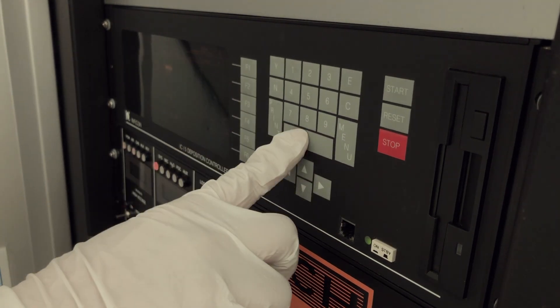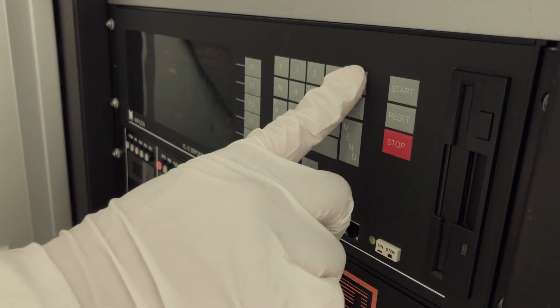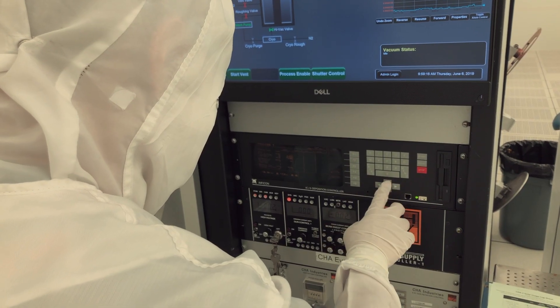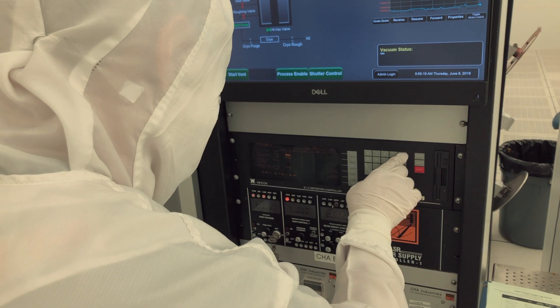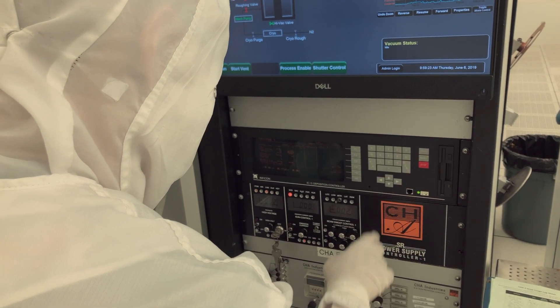You should only change the deposition rate, final thickness, and thickness limit. Typical deposition rates range from 1 to 3 angstroms per second. Ensure that the values set for the final thickness and thickness limit are set to the same value.